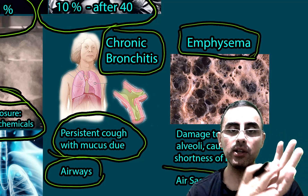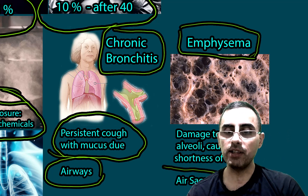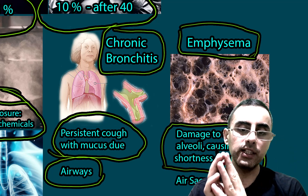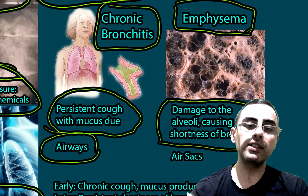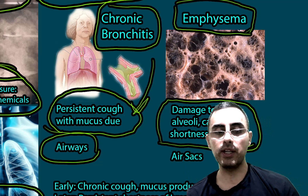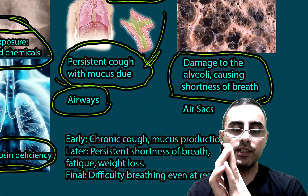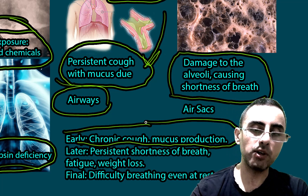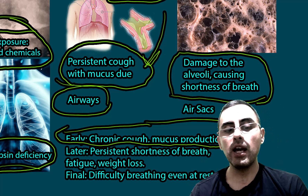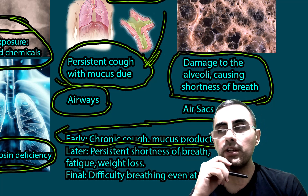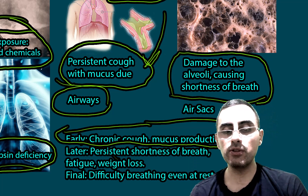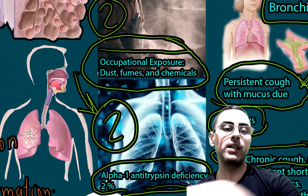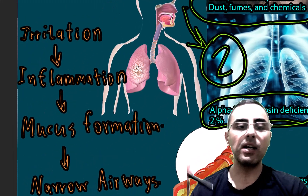The second type is emphysema, where the alveoli in the lungs are damaged. In chronic bronchitis the airways are damaged; in emphysema the lungs themselves are damaged. When lungs are damaged, shortness of breath is more predominant; in chronic bronchitis, persistent cough with mucus production is the main feature. Early symptoms are chronic cough with mucus production, followed by shortness of breath on physical activity, and at later stages persistent shortness of breath, fatigue, weight loss, and finally difficulty breathing even at rest.